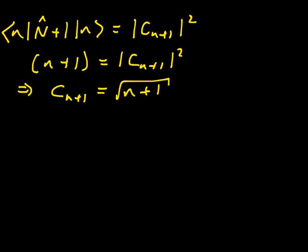Of course, there's an arbitrary phase there. The square modulus of C N plus 1 is equal to N plus 1, so we could have any arbitrary phase we like in there. I'm choosing to use the obvious simple phase of 1. And so now we can say that the action of A plus on the state ket N is to give us root N plus 1 times the state ket N plus 1.